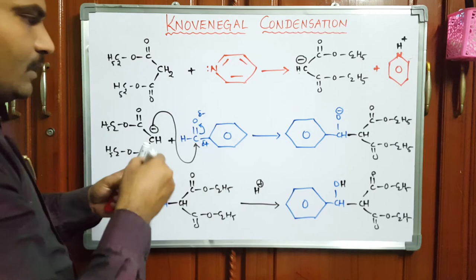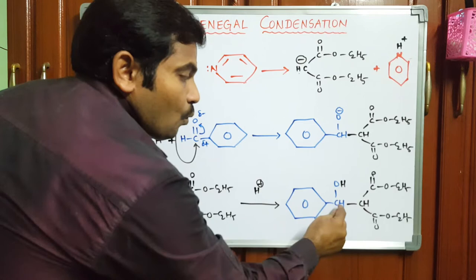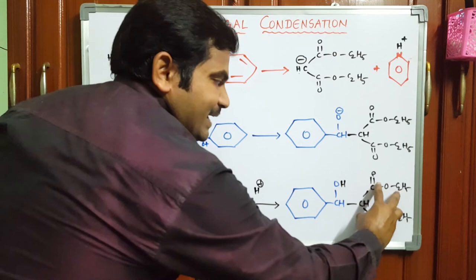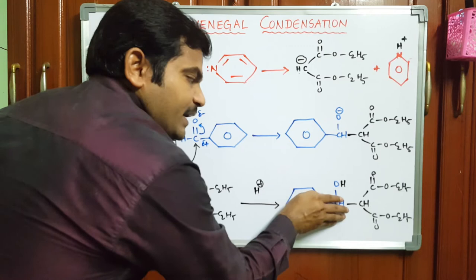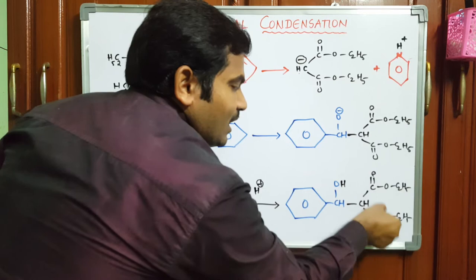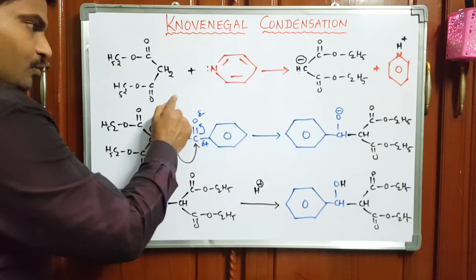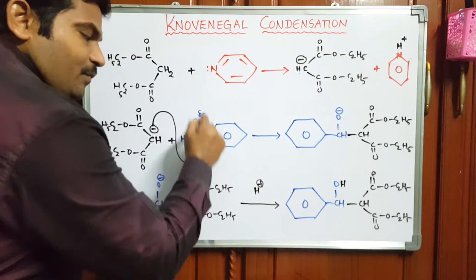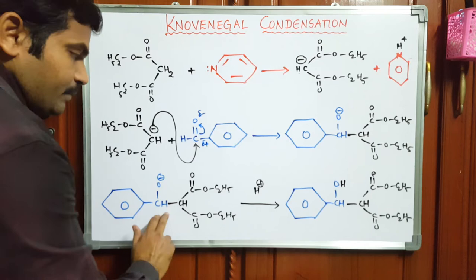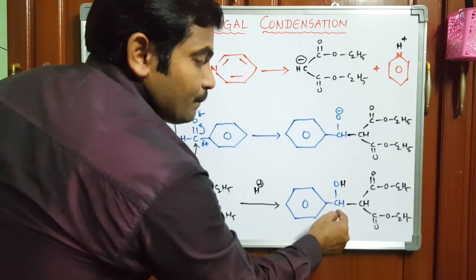Step 3 is protonation of the alkoxide to form the beta-hydroxy product. The product is named alpha-(1-hydroxybenzyl) diethyl ester of malonic acid. Taking the ester as the parent chain, this is the alpha carbon and that is the beta carbon. At the alpha position there is a substituted hydroxybenzyl moiety. Hence it is called alpha-(1-hydroxybenzyl) diethyl ester of malonic acid.